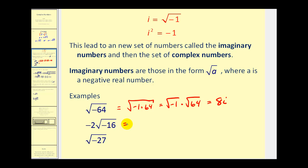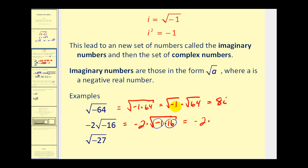On this next one, we have negative 2 times the square root of negative 16. That's negative 2 times the square root of negative 1 times 16. It's very similar to what we've been doing with square roots — we just have an extra factor of negative 1, which gives us an i. So this would be negative 2 times i times 4, which is equal to negative 8i.